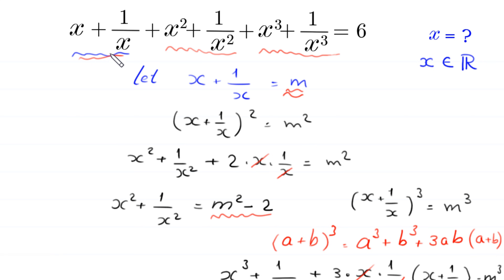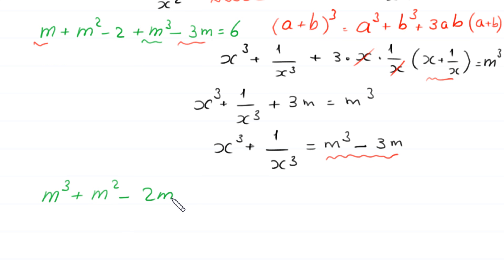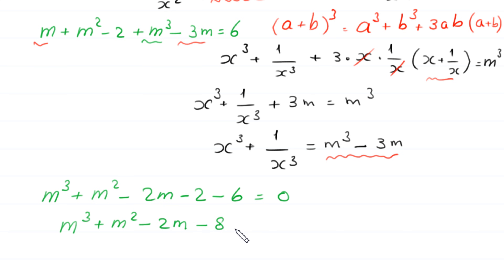The original equation becomes m plus m squared minus 2 plus m cubed minus 3m equals 6. Rearranging: m cubed plus m squared, and 1m minus 3m gives negative 2m, then moving 6 to the left hand side gives negative 6. So: m cubed plus m squared minus 2m minus 6 equals 0, and combining the constants: m cubed plus m squared minus 2m minus 8 equals 0.